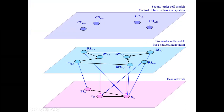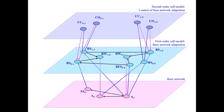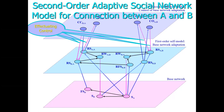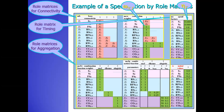For the control of this whole process, we have a second adaptation level where you can control the formation of representations — you can decide to look at somebody or decide to communicate so that you can get information from each other. This becomes the total model, including the effectuation of the control, giving us in total a second-order adaptive social network model for the connection between A and B, which has two sides and two directions.